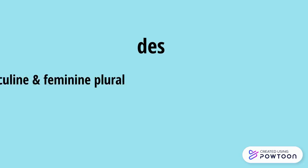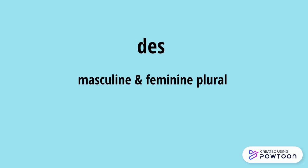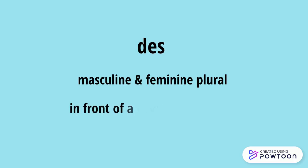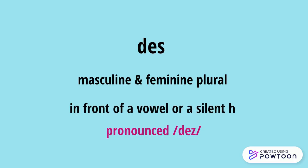'Des' is used with masculine and feminine plural nouns. For example, 'des garçons', 'des filles'. Note that in front of a vowel or a silent H, 'des' is pronounced with a liaison. For instance, 'des étudiants', 'des étudiantes'.